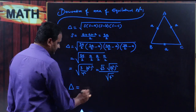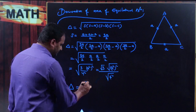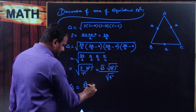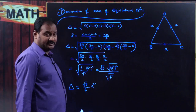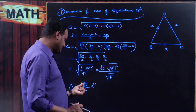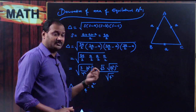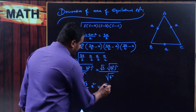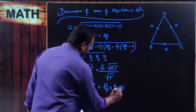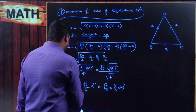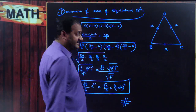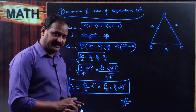Splitting the square root for every single term: root 3 into root over a squared whole squared, divided by root over 4 squared. Finally, the area of equilateral triangle equals — the numerator is root 3, divided by root over 4 squared which is 4, and root over a squared whole squared is a squared. Therefore, the formula for area of equilateral triangle is root 3 divided by 4 times a squared. This is one way to derive the area of equilateral triangle.